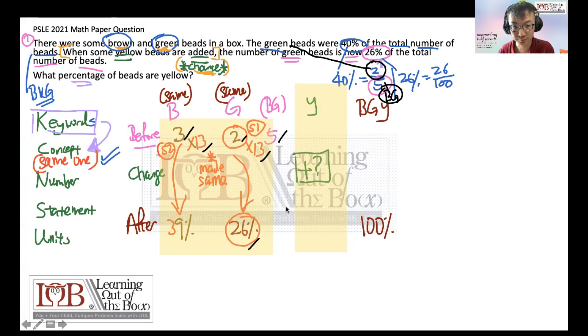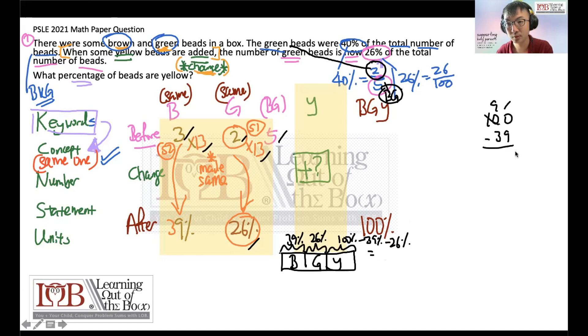In this case, you know that if you draw a model, you have B, G, Y. You have 39%, you have 26%. So for Y, you have 100% minus 39% and minus 26%. I don't have my calculator with me, so I'm going to do everything from scratch. This is 35%. In this case, your percentage of yellow beads is actually 35%.